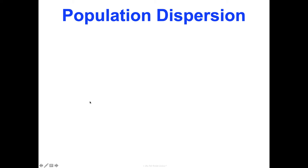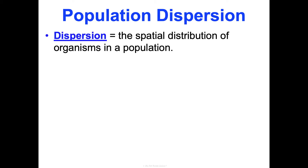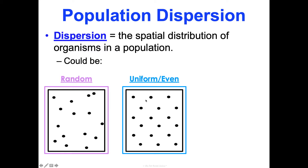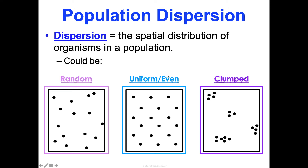Another way to describe populations is by how they are dispersed within their defined space. Dispersion is the spatial distribution of organisms in a population. There are three patterns: random, where organisms are scattered with no real pattern; uniform or even, where organisms are spaced out pretty evenly among resources; and clumped, where organisms group together in clusters throughout the space. These are different ways to describe how organisms are distributed in a population.